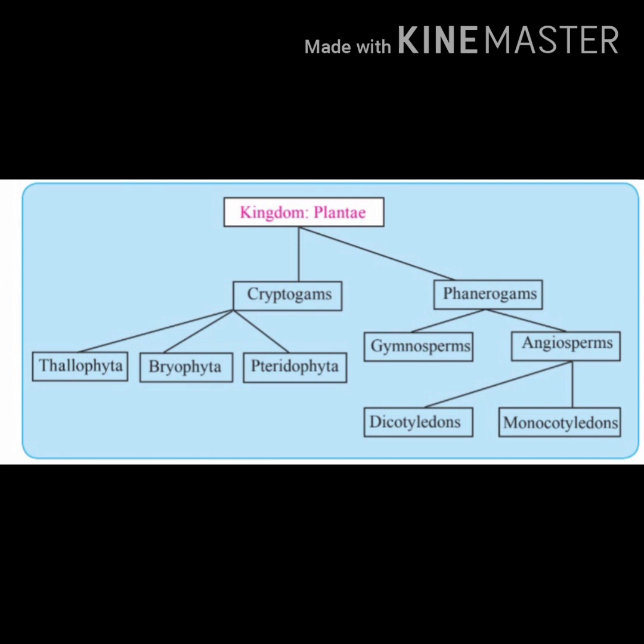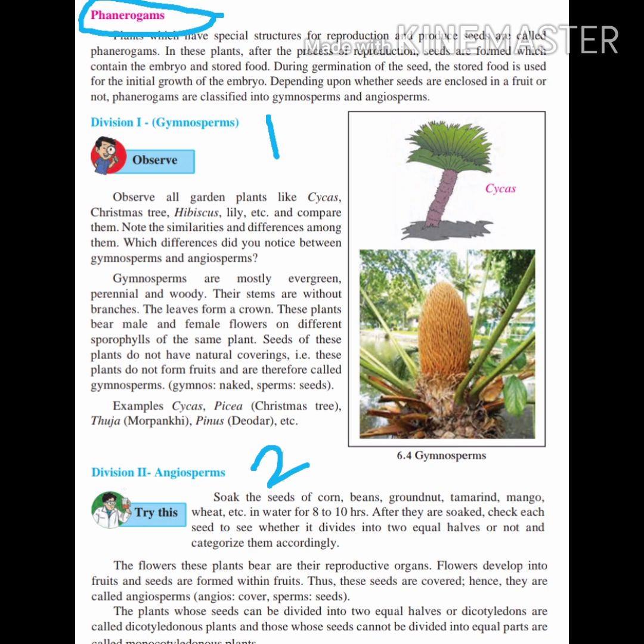Gymnosperms do not have fruit but seeds are present. In angiosperms, seeds are present and they are present inside the fruit. Phanerogams is divided into two divisions: Division 1 is gymnosperm and Division 2 is angiosperm.